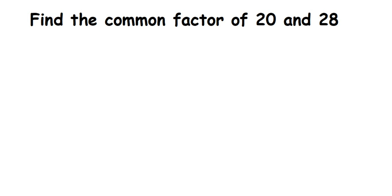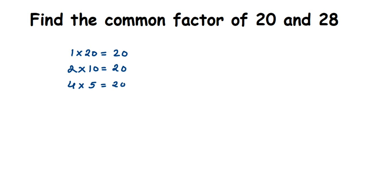Let's find the factors of 20. All numbers go in the 1 table, so 1 × 20 = 20. Then 20 goes in the 2 table: 2 × 10 = 20. Next, 3 — 20 doesn't go in the 3 table. Then 4: 4 × 5 = 20. Since I've written 4 × 5, I don't need to write 5 × 4 again because they are the same.